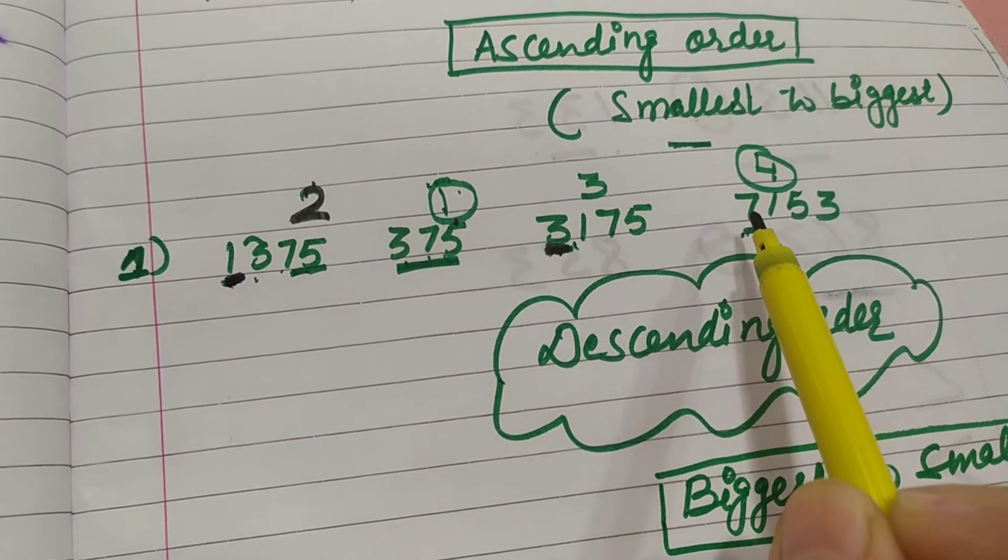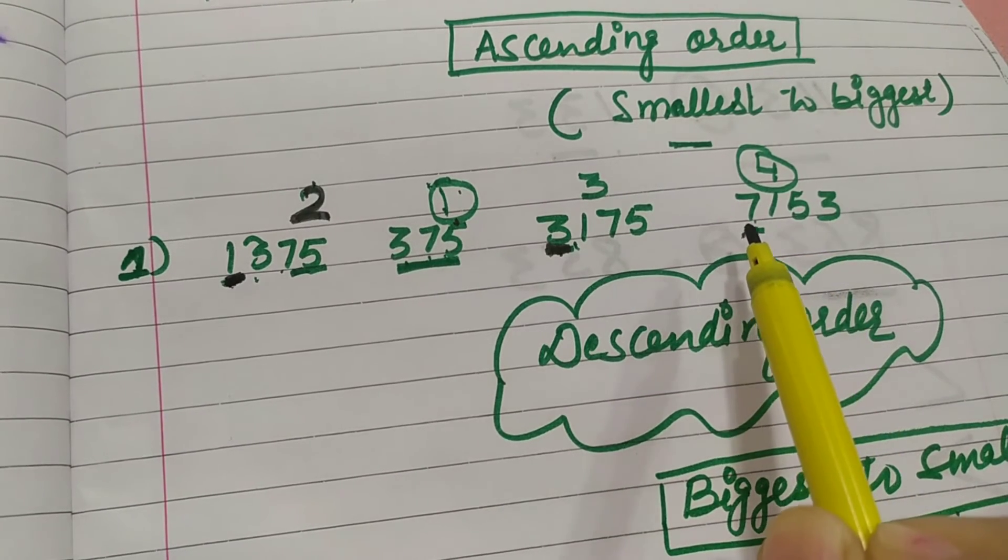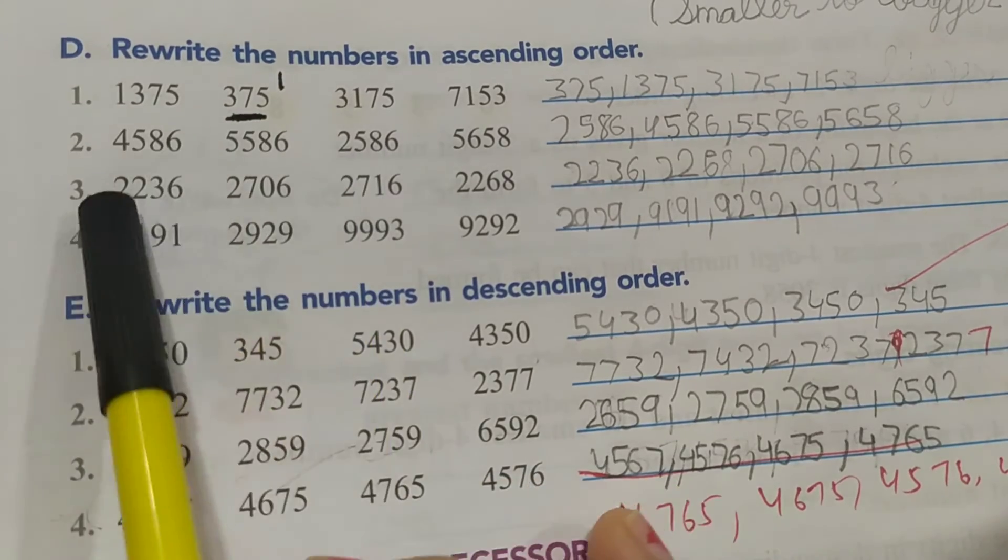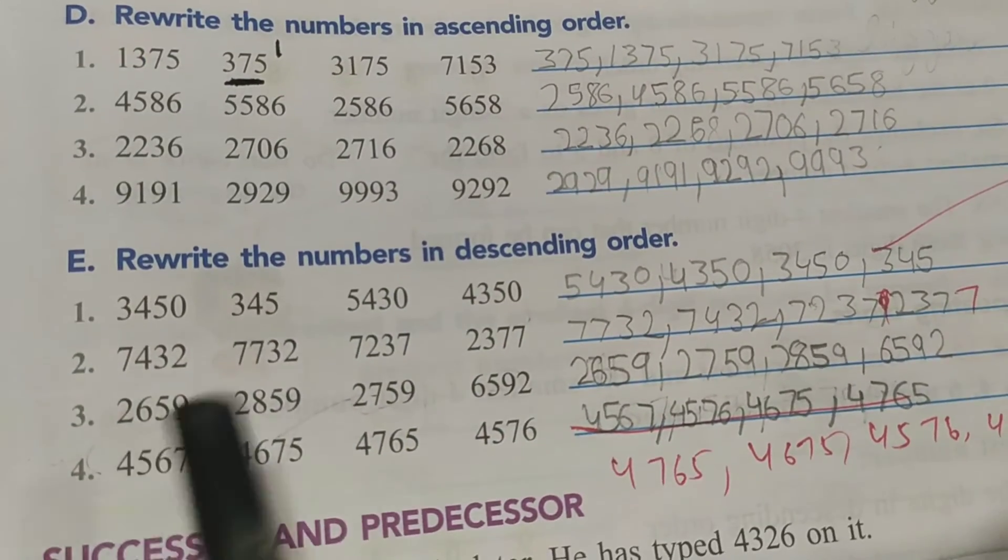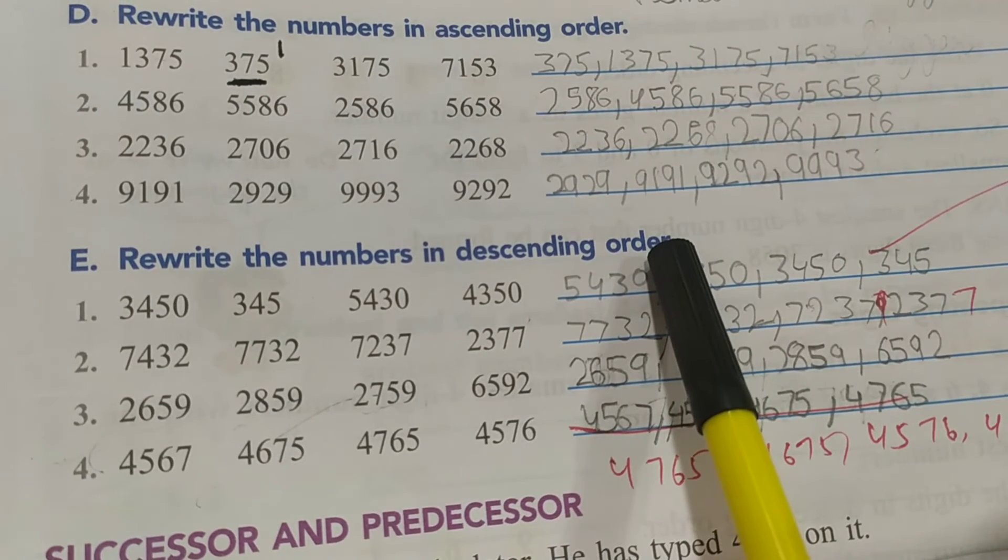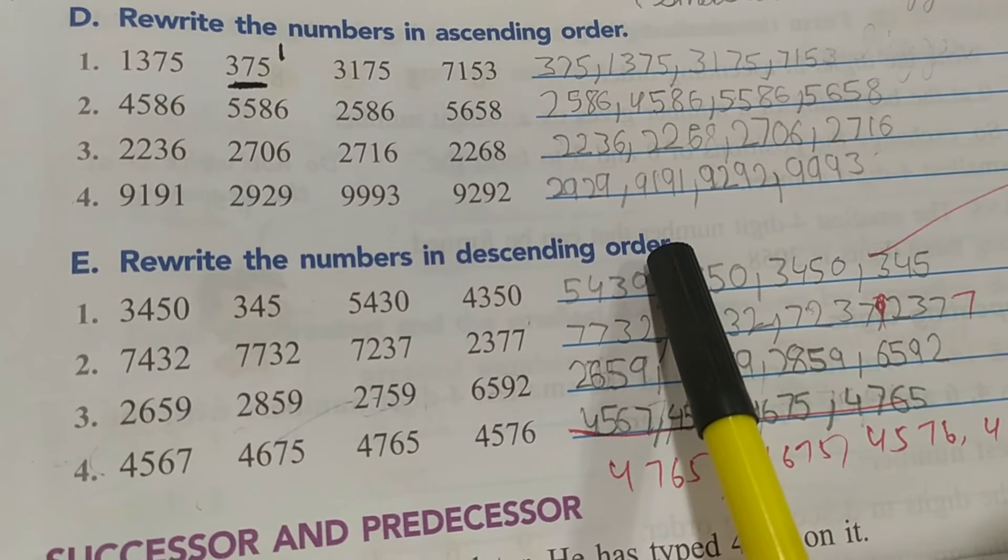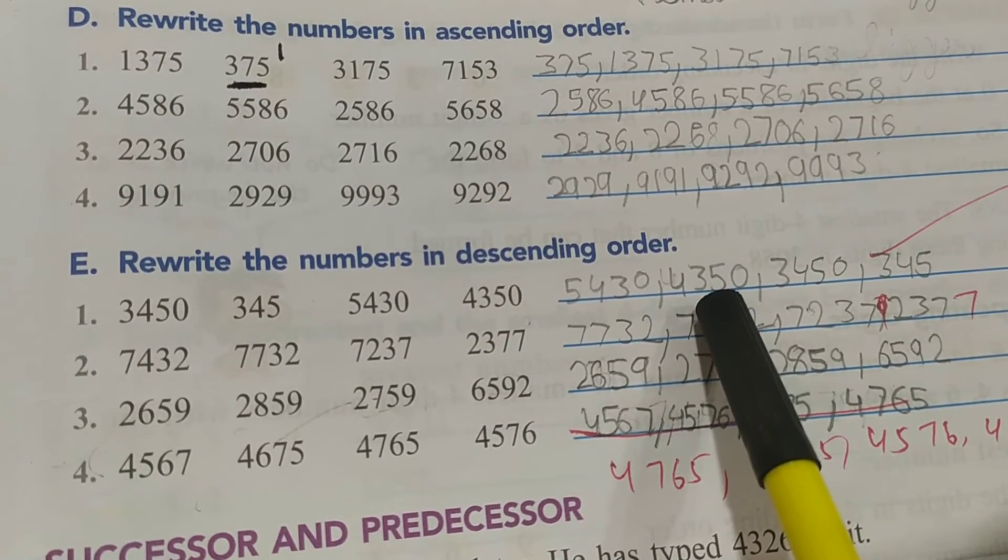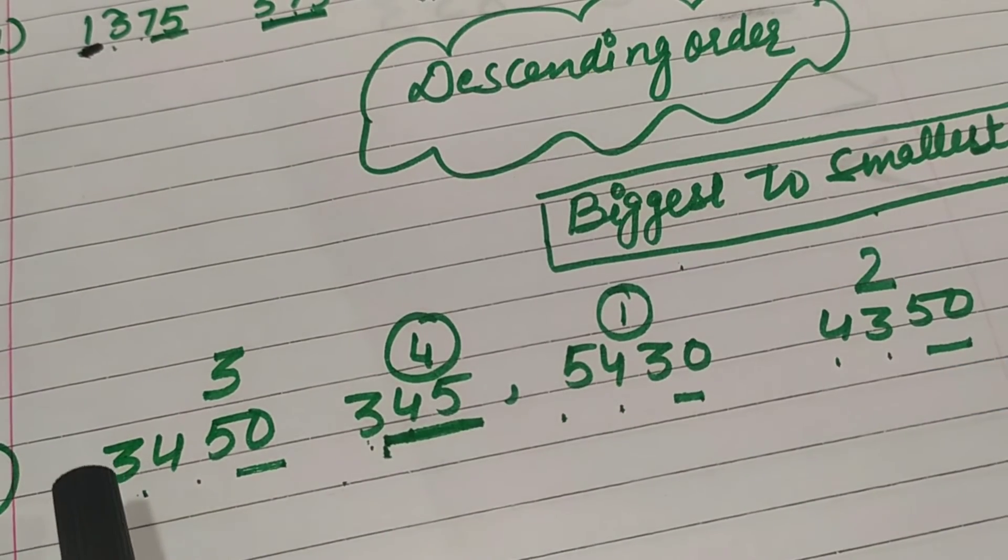Next is rewrite the numbers in descending order. Descending order means we have to write the biggest number at first and the smallest number at the end. Here we have first question.